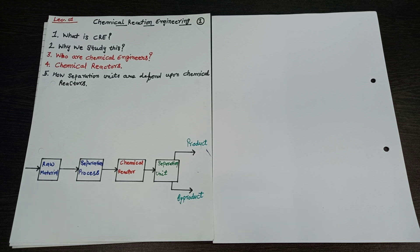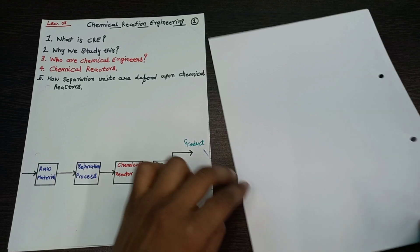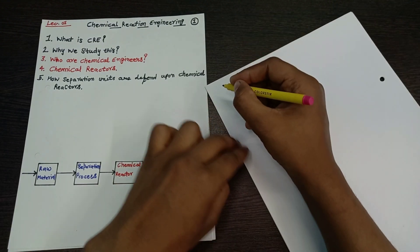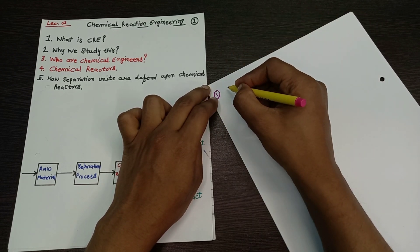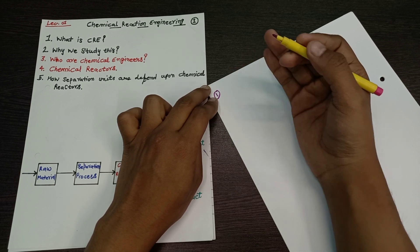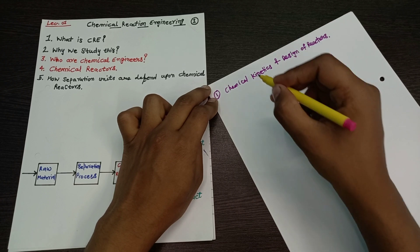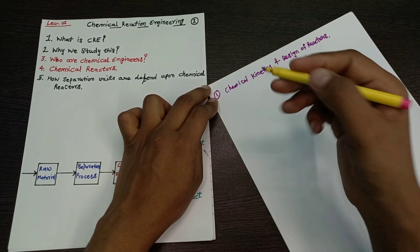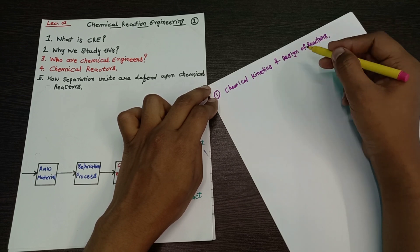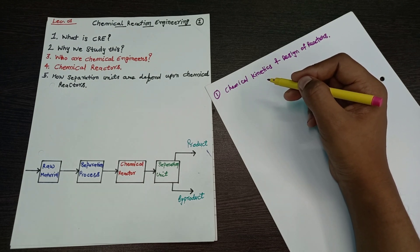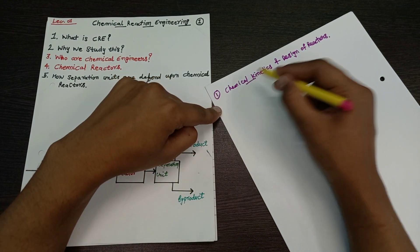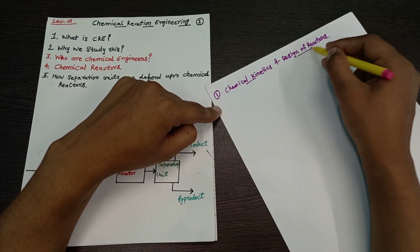So the first topic is: what is chemical reaction engineering, or CRE? We can say that CRE is the study of chemical kinetics and reactor design. We can divide chemical reaction engineering into two parts: the first one is chemical kinetics and the second one is design of reactors.